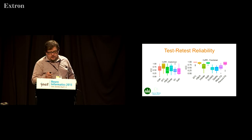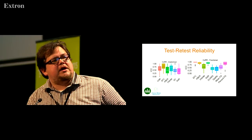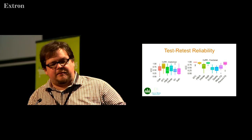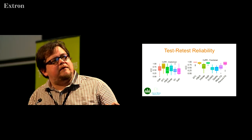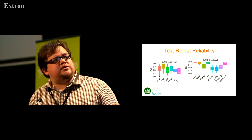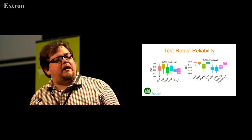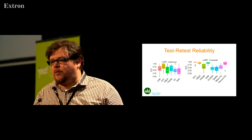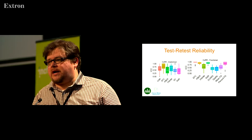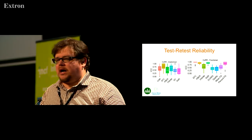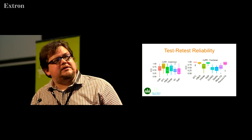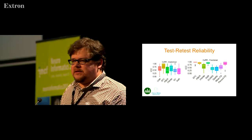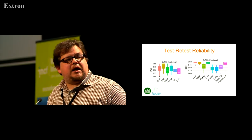We also have test-retest reliability on these measures. DVARs — a measure of the intensity variation between subsequent images — varies quite a bit over time, whereas other measures such as entropy focus criteria or foreground-to-background energy ratio don't vary as much. What we're pulling out is that DVARs is more sensitive to subject-specific effects on data quality, whereas those other measures are looking at more technical variations like scanner type or sequence parameters — and that's why they're more reliable.